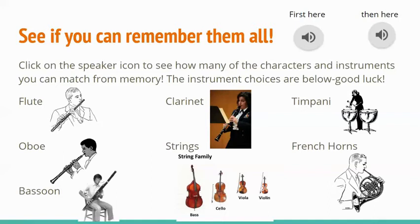And what is this oboe describing? Right again — the duck. And now the flute. You're batting a thousand — the bird. Now who's this low character in the clarinet?